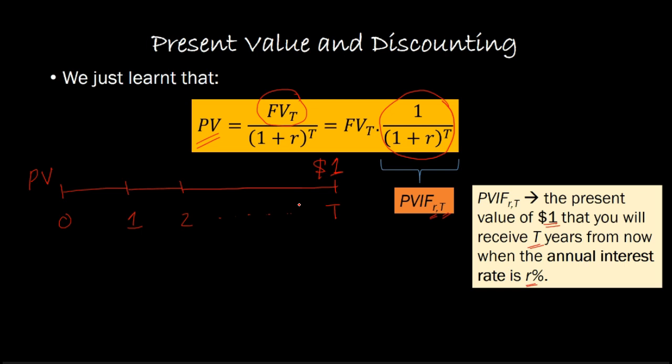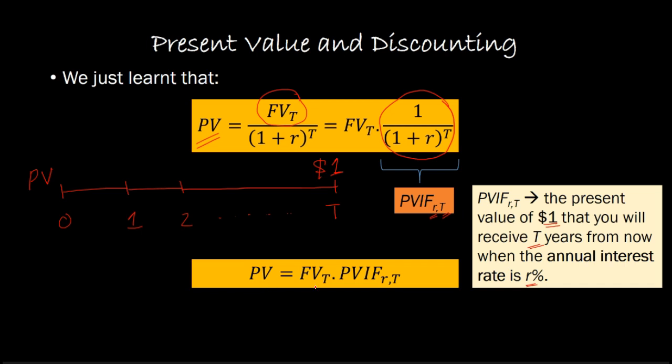In other words, that is our present value interest factor. So for any amount that we're getting T years into the future - suppose it's $500 - if instead of $1 being received T years out, we're getting $500, we could simply multiply that number by the present value interest factor. The idea is simply this: if we know how much $1 T years out is worth to us today, then for $500, all we have to do is multiply that 500 by that factor.